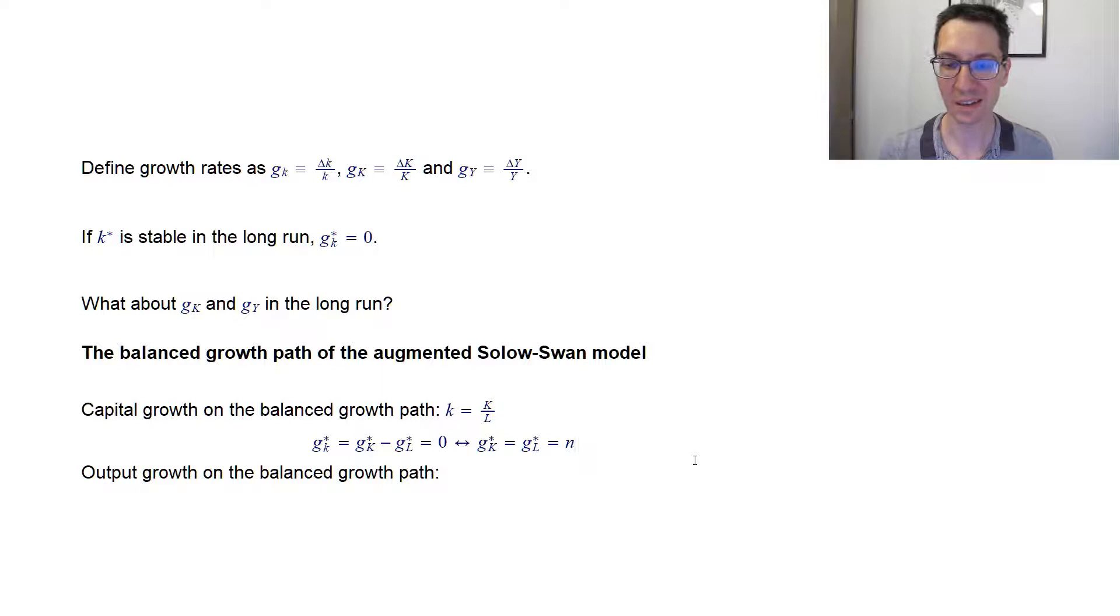So we see that in the end, the economy is going to accumulate capital at the same rate as it accumulates new workers, which makes sense. Again, in my example of a factory, if I think the optimal is to have one worker, one machine, then as long as I increase the amount of workers by a constant fraction, then I have to continue on and increase the amount of machines by the same fraction. So this makes intuitive sense. So it means that capital has a balanced growth path because in the long run, its growth rate is going to be n.